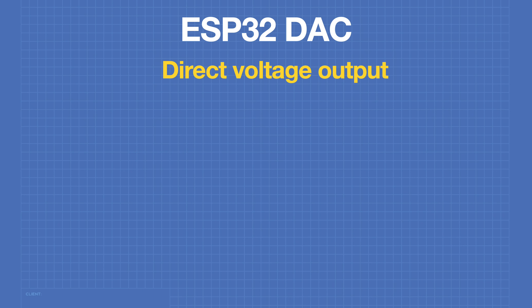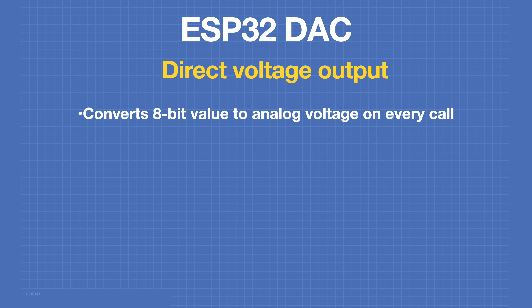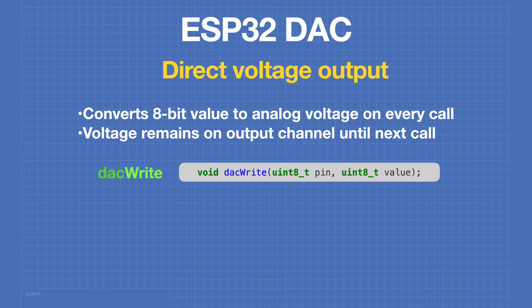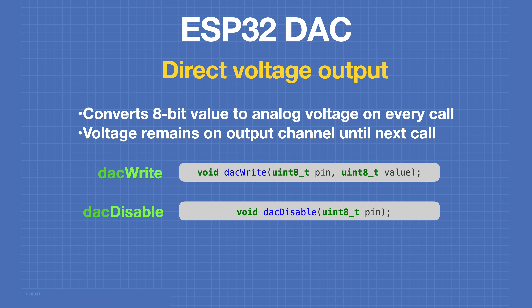Direct voltage output is the simplest form of output on the DAC. It simply converts the 8-bit value presented to the DAC into an analog voltage every time the DAC is called. This voltage will remain on the output channel until the next call. Using the Arduino IDE, we can use the DAC write and DAC disable functions to control the DAC in direct voltage output mode.